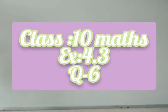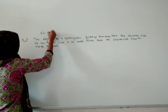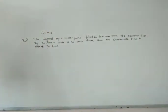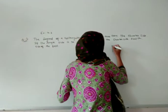The overview of this question: this is exercise 4.3, question number 6. The diagonal of a rectangular field is 60 meters more than the shorter side. If the longer side is 30 meters more than the shorter side, then we need to find the shorter side.